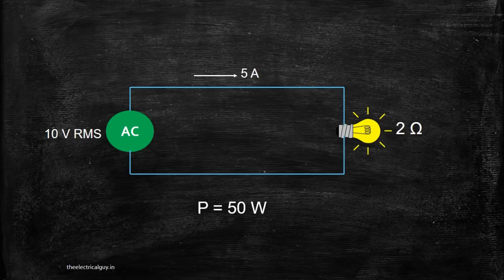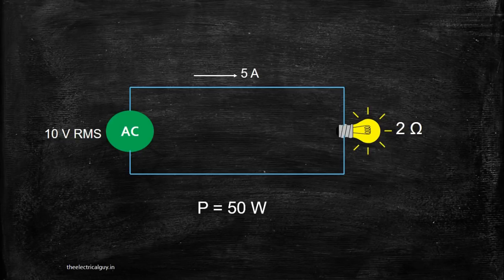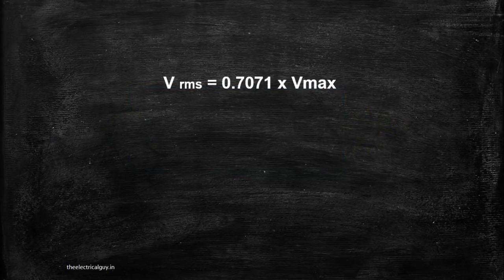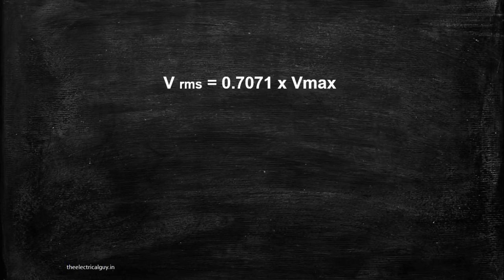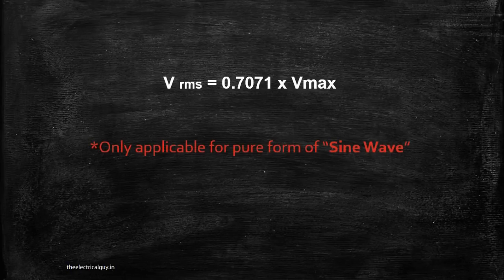To make things more easy, we also have a formula to calculate the RMS value or peak value and it is given by V RMS is equal to 0.7071 multiplied by V max or peak value.